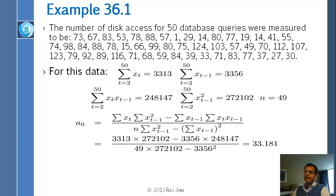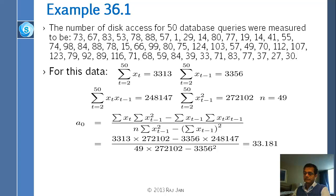Why 49? Because when you want to compute x1, you don't have x0 — the data only starts at x1. So you start with x2 = a0 + a1·x1, and you can go all the way to x50, giving 49 equations, not 50. Even though there are 50 observations, the equations start from x2, because the observations start from x1.